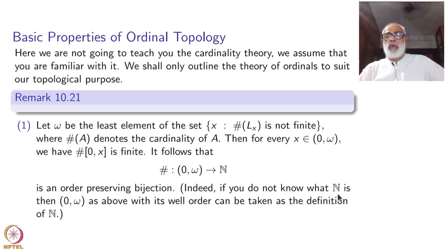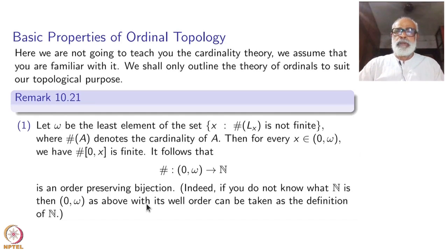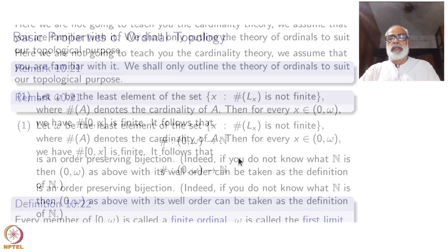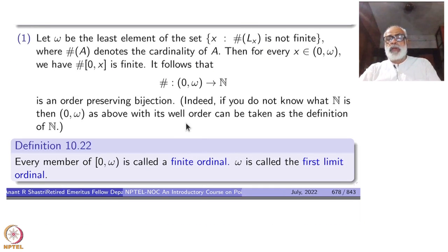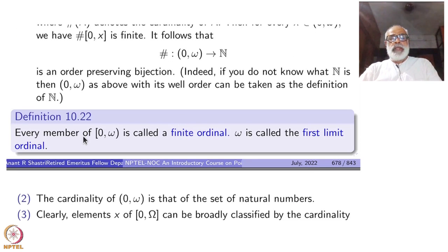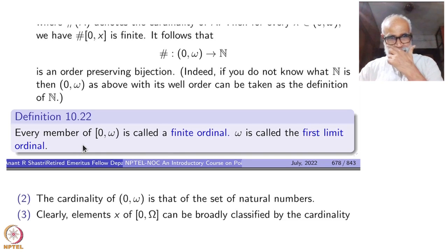Indeed, if you do not know what ℕ is, then [0, ω) as constructed above can be thought of as ℕ, and you can construct arithmetic out of that using the successor theory. Every member of [0, ω) — that is, [0, ω) closed on the left, open on the right — is called a finite ordinal. Omega is called the first limit ordinal. There are other limit ordinals, of course.